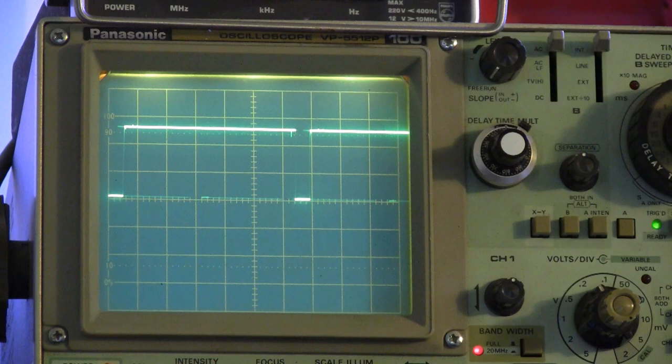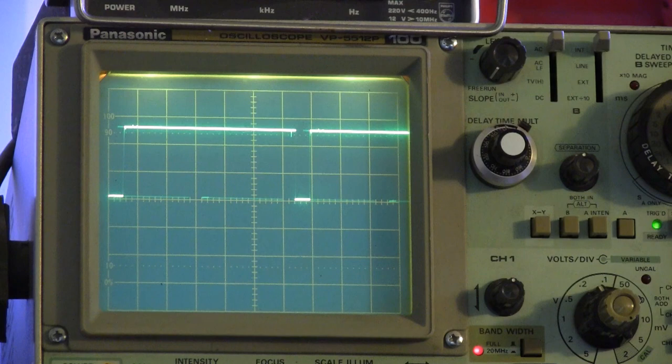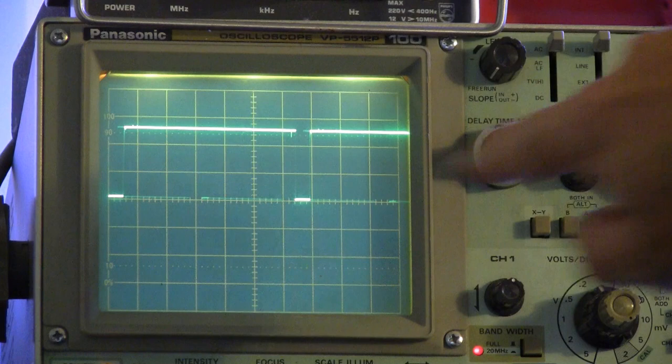The digital oscilloscope has a control marked cursors. You turn those on, select vertical cursors, and two vertical lines will appear. And you can dial those back and forth and put them on any edges you want and measure the time between those edges.